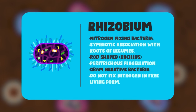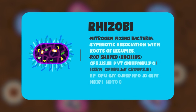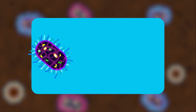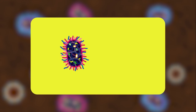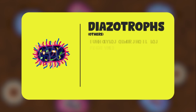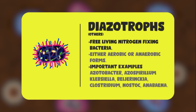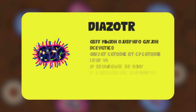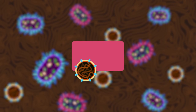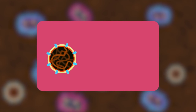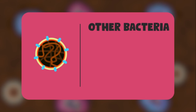During symbiosis, rhizobium undergoes structural and physiological changes to be able to perform nitrogen fixation. There are also some diazotrophs that can perform nitrogen fixation in free-living forms without the need to perform symbiosis. These bacteria can either be aerobic or anaerobic. However, the majority of soil bacteria are heterotrophs and do not have the ability to fix atmospheric nitrogen.